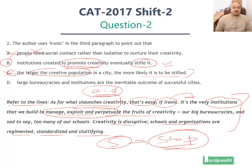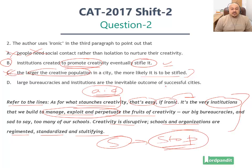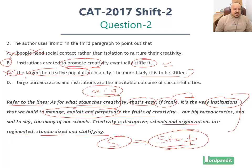Option D does have large bureaucracies and institutions in it, but does it make sense? It says: large bureaucracies and institutions are the inevitable outcome of successful cities. The problem is this does not correlate with the topic of creativity at all — we don't know how it correlates to creativity and stifling it. This is outside the context of the passage, hence ruled out.